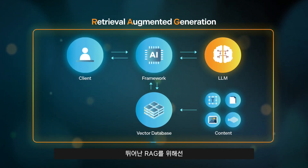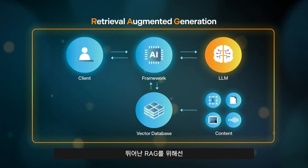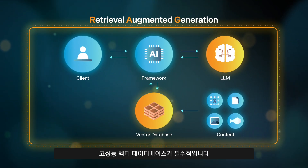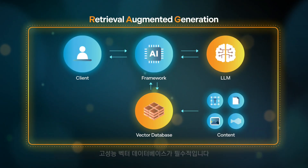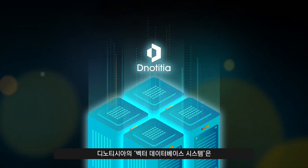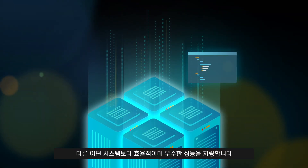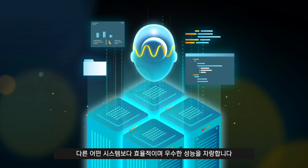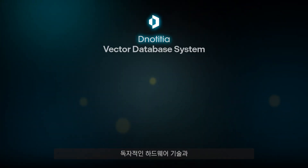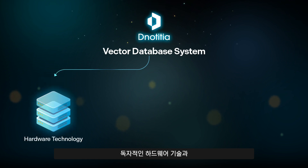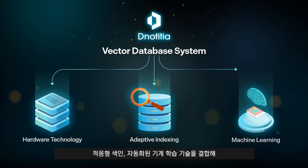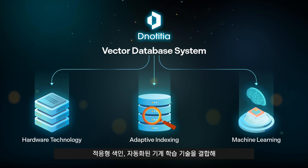Denoticia's vector database system is more efficient and high performance than any other system. By combining proprietary hardware technology with adaptive indexing and automated machine learning, we offer unprecedented speed and accuracy.